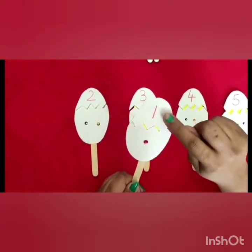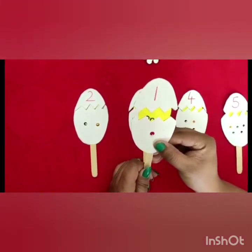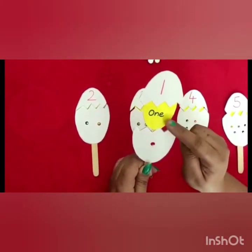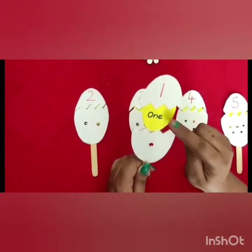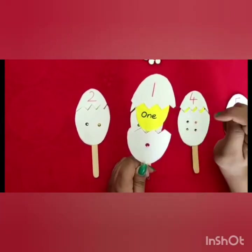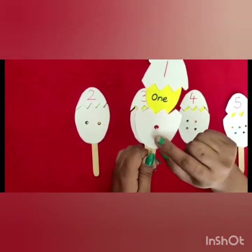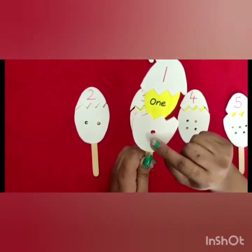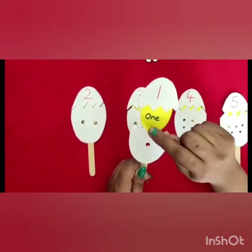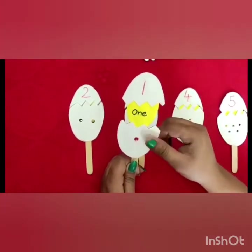Which number is this? 1. Okay, so let us break it. Yes! What can you see here? This is a number name. Now we will read it. O, N, E — 1. This is the number 1, and this is the number name. O, N, E — 1. And this is the value.